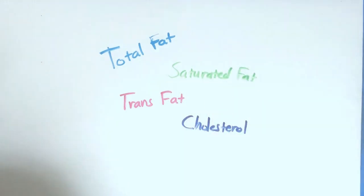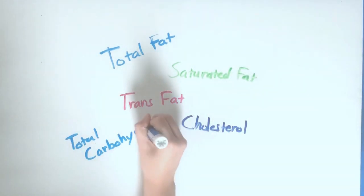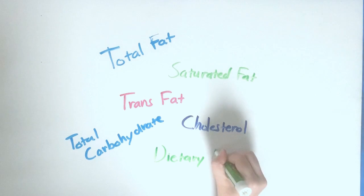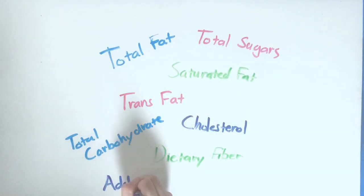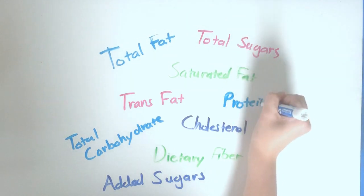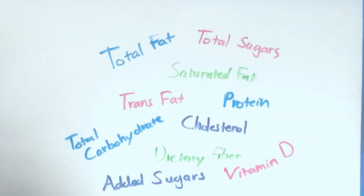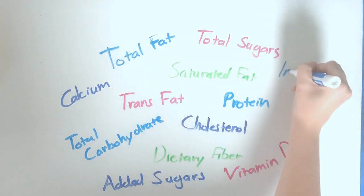Total fat, saturated fat, trans fat, cholesterol, total carbohydrate, dietary fiber, total sugars, added sugars, protein, vitamin D, calcium, iron, potassium. Whew! That's an awful lot. Maybe we should sort them into categories to make sense of all of them.